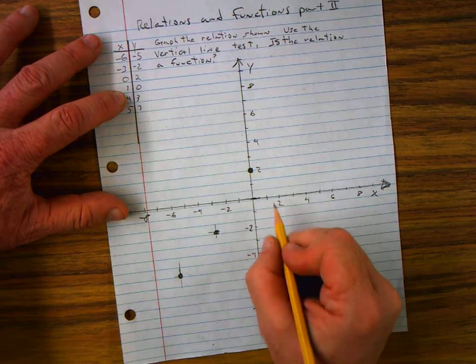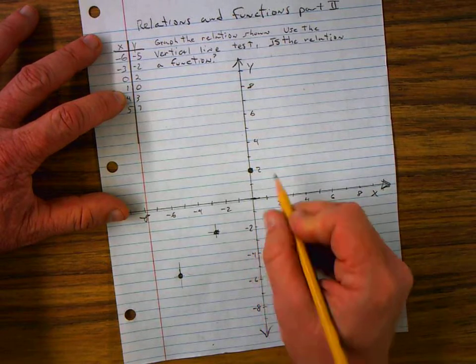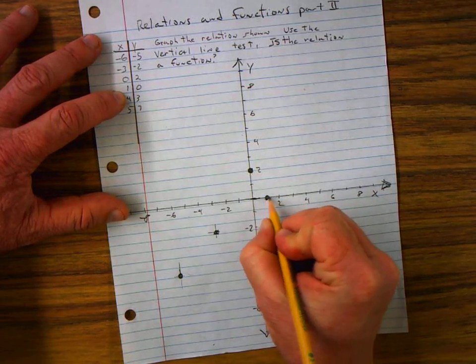My next ordered pair is over X, 1. And Y is 0. So I don't go up or down. So that's my next ordered pair.